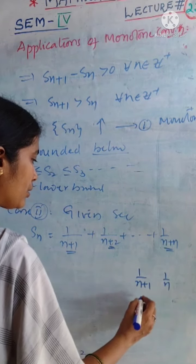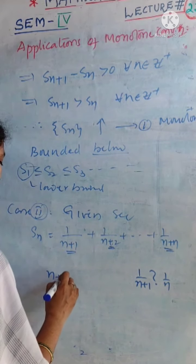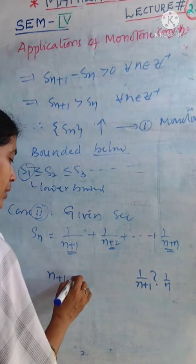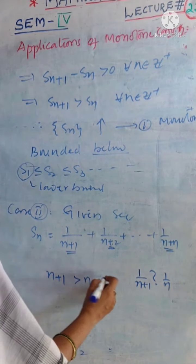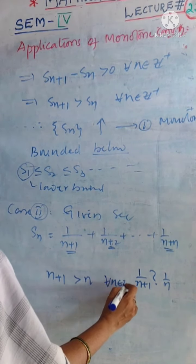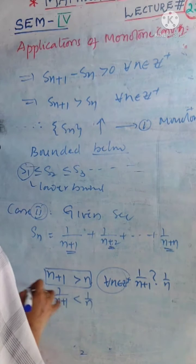1 by n plus 1 plus 1 by n. What is the relation? For n being a positive integer, we know that n plus 1 is more than n for every n. This is reciprocal, so 1 by n plus 1 is now less than 1 by n.